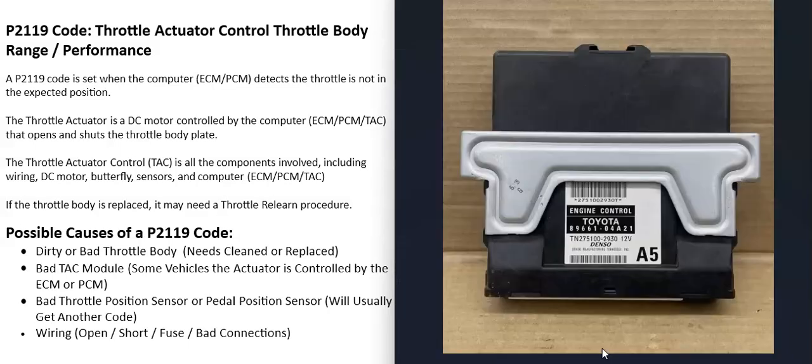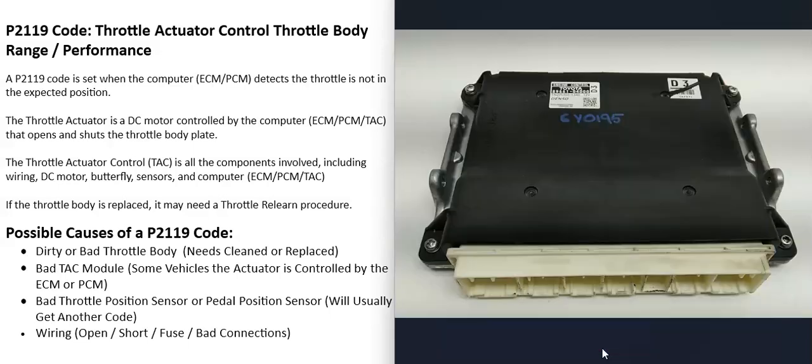Another possible cause is a bad throttle actuator control module, engine control module, or powertrain control module — whichever computer is controlling that DC motor in the throttle body. This isn't too common, and usually when there's a problem with the computer you'll get a lot of other codes as well. If you suspect a bad computer, also check that the battery is good and verify alternator output, since all these computers need a stable power supply.